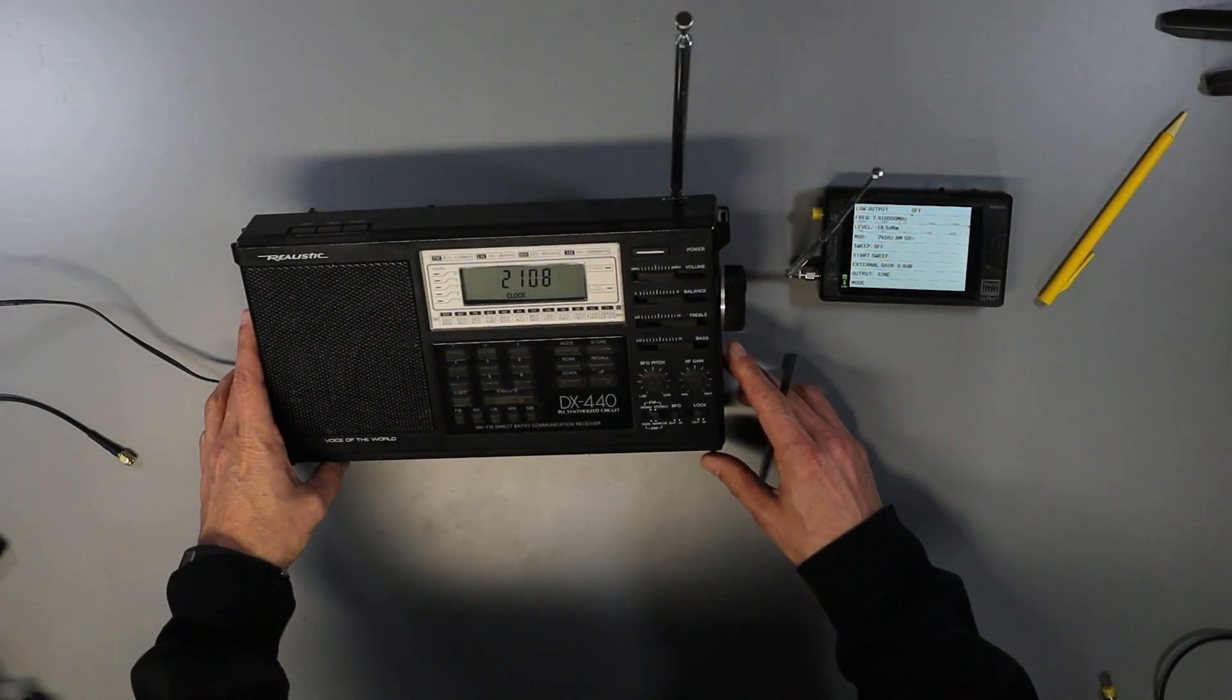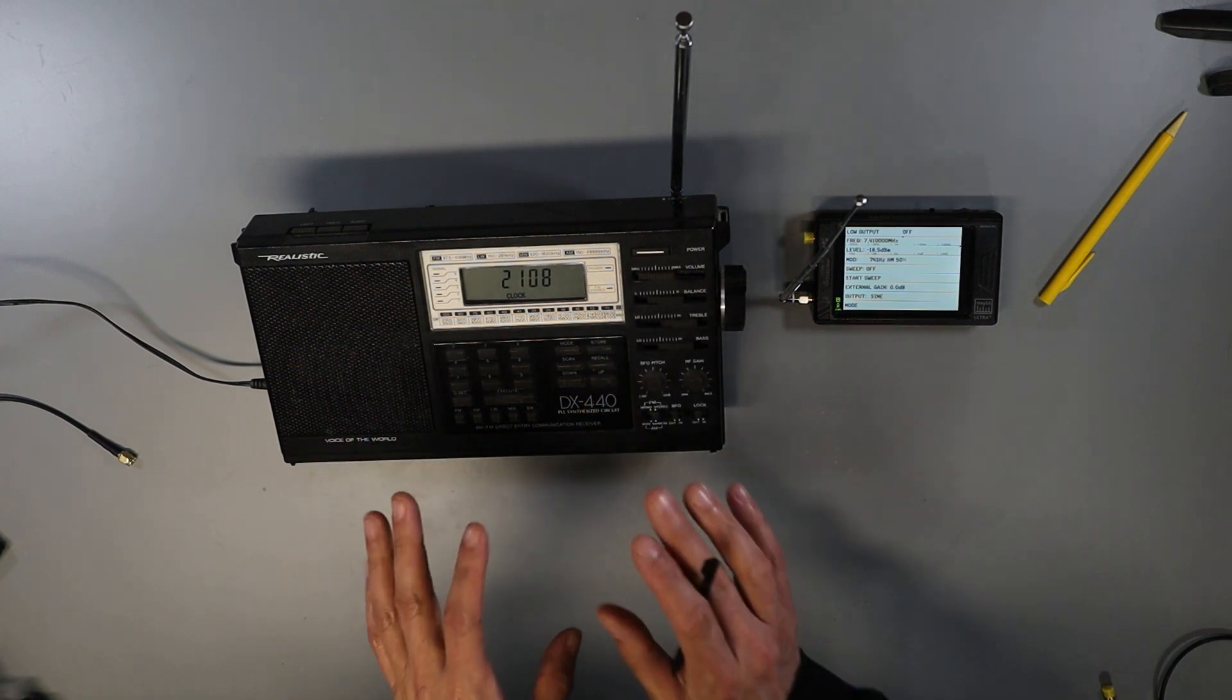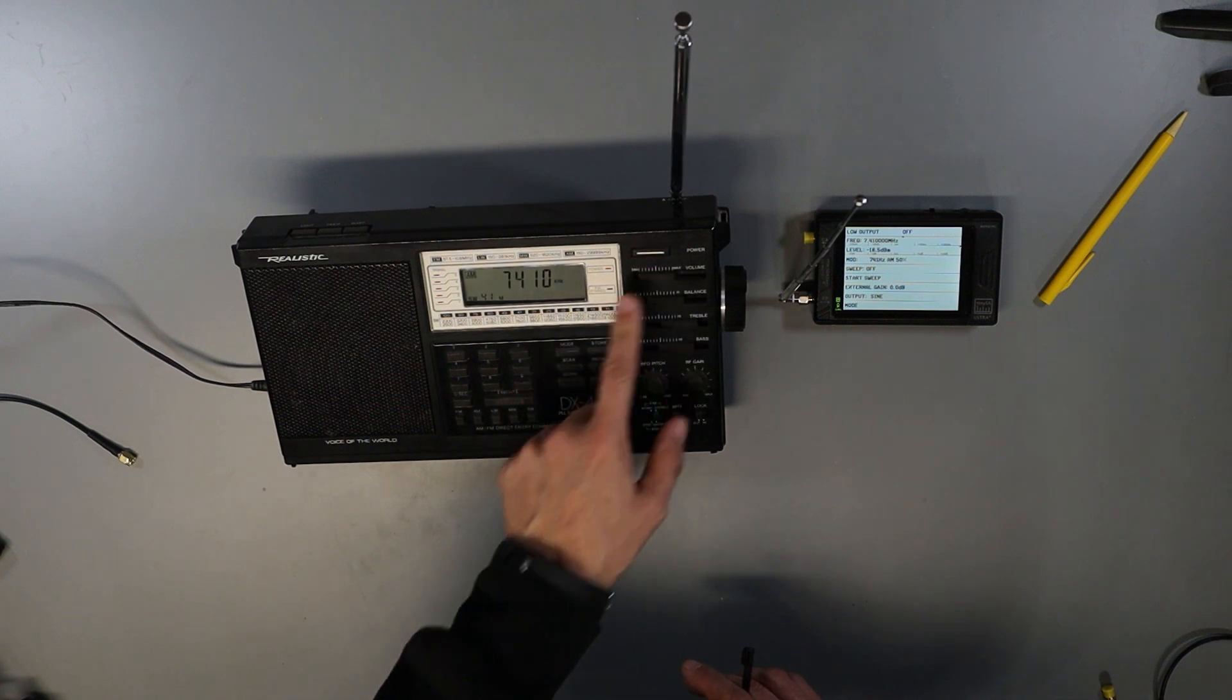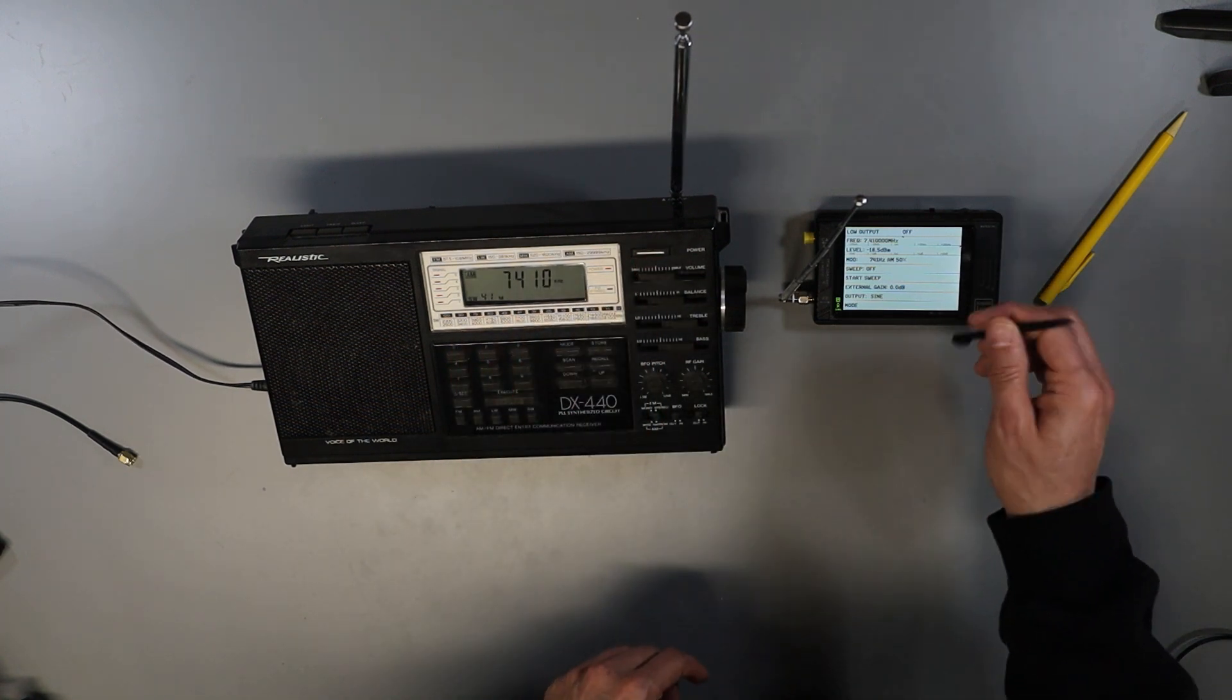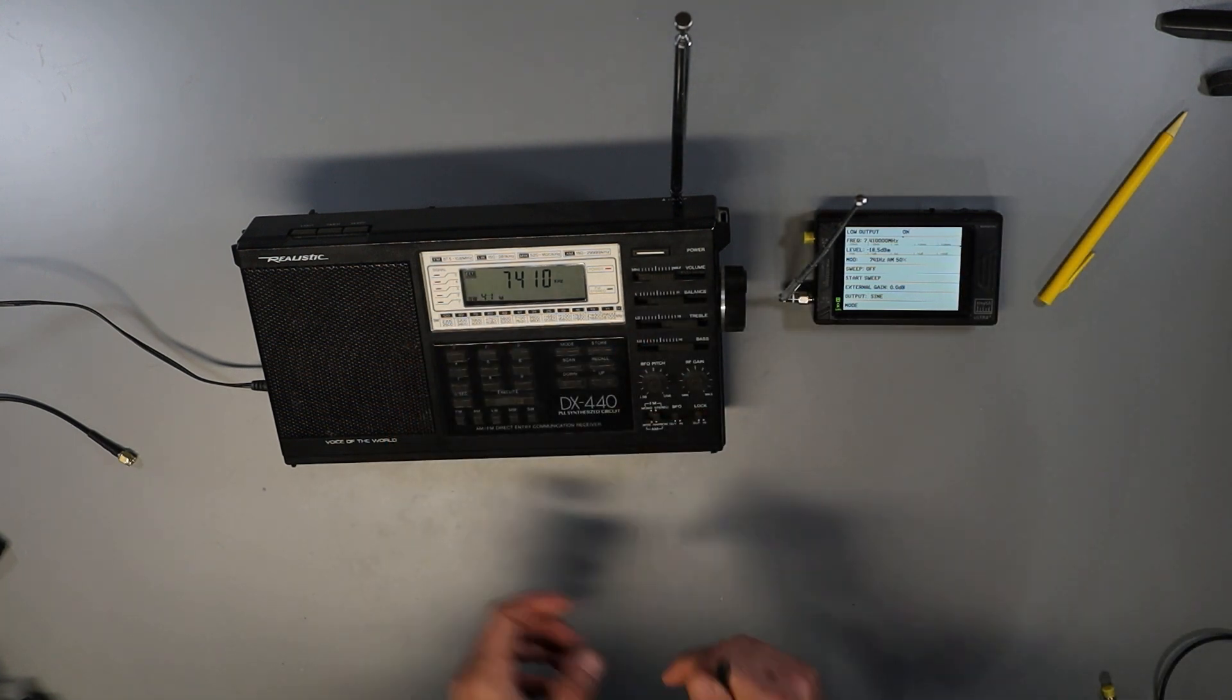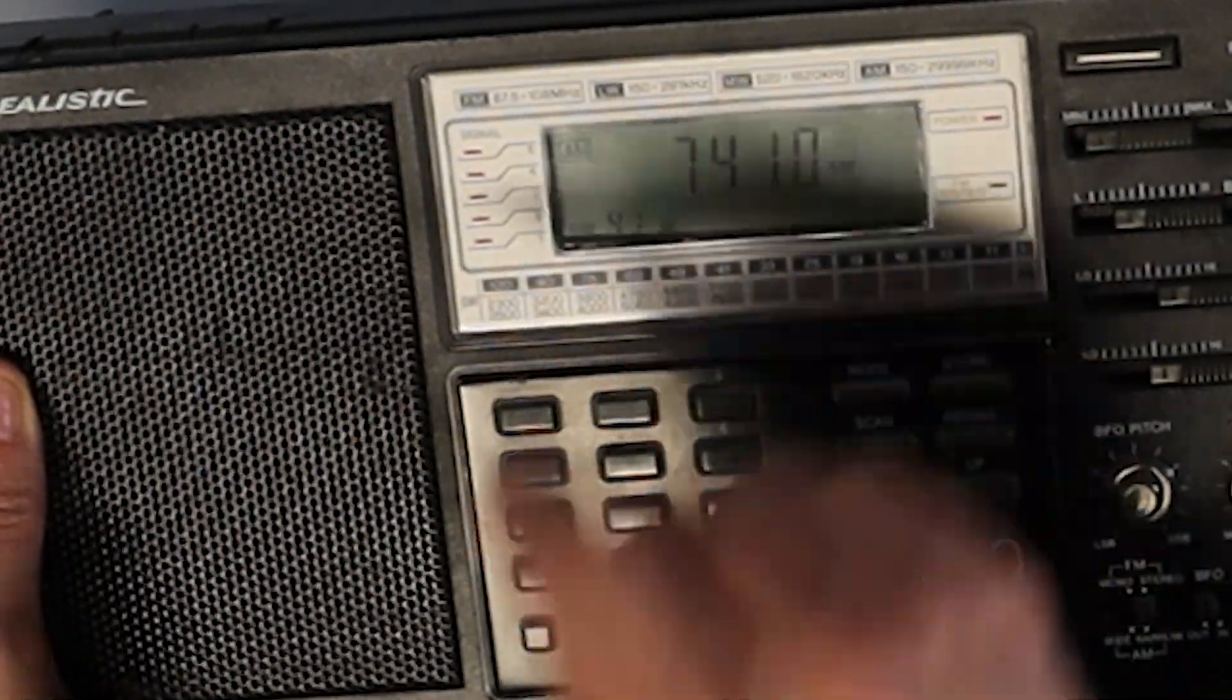Just to give you a quick demo of the signal generator, I've brought in my dad's old Realistic DX440 shortwave receiver. So if I turn that on and tune it to 7.41 megahertz, I can then enable the signal generator on the TinySA, and you can hear the signal, and maybe you can even see that we're getting a full scale signal on the signal meter.